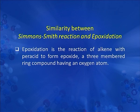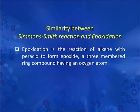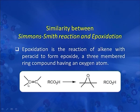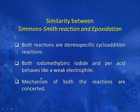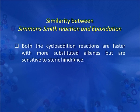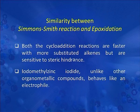We will now discuss the similarity between the Simmons-Smith reaction and epoxidation. Epoxidation is the reaction of an alkene with a peracid to form an epoxide — a three-membered ring compound containing an oxygen atom. Both iodomethyl zinc iodide and peracid behave like weak electrophiles. The mechanisms of both reactions are concerted, both are faster with more substituted alkenes but are sensitive to steric hindrance. Notably, iodomethyl zinc iodide, unlike other organometallic compounds, behaves like an electrophile.